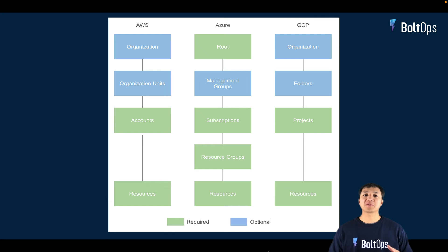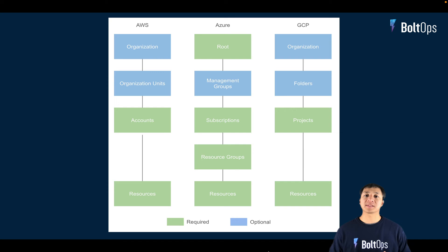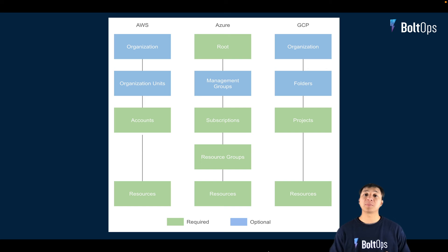Now above those, there are higher-level components that you just don't always see. With AWS, above the account, you have organizations and also organizational units. The organization is like the all-encapsulating root-level component, and underneath it there are organizational units — sometimes called OUs — which are basically a way to group departments, or maybe even companies and subdivisions together.